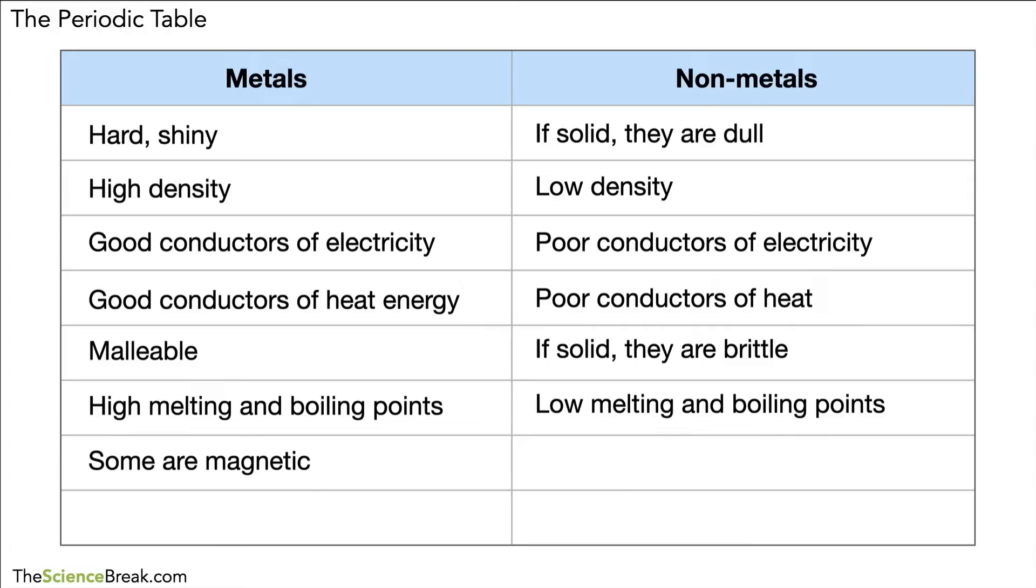Metals are sometimes magnetic. Nickel, iron, and cobalt are metals that are magnetic, whereas in terms of the non-metals, none are magnetic; they do not get attracted by magnets.